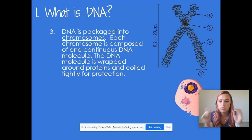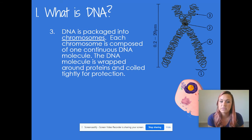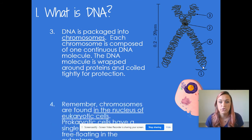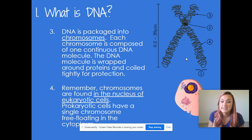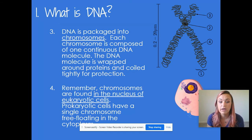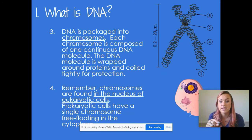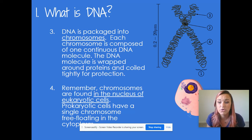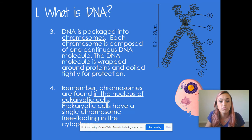Each of these chromosomes is composed of this one continuous strand of DNA. This DNA is then wrapped around proteins and tightly coiled up in those little packaged chromosomes. Prokaryotic cells have a single chromosome that's actually free floating in the cytoplasm — it would be like throwing spaghetti into a bowl of water. If you pack that spaghetti into a little bag and throw it into a bowl of water, that's what a eukaryotic cell is like.